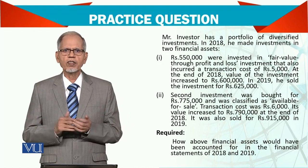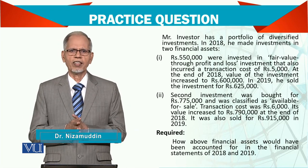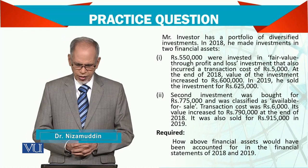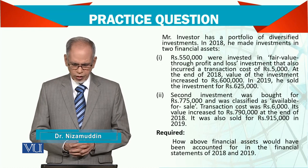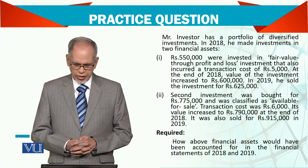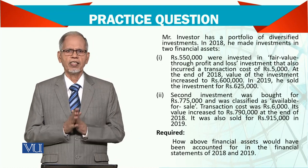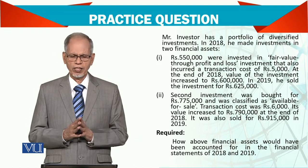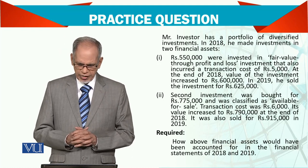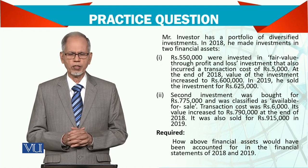Normally, you don't buy directly on the market — you buy through a broker, and you have to pay broker fees. At the end of 2018, the value of this FVTPL investment increased to 600,000. Then in 2019, it was sold for 600,000.